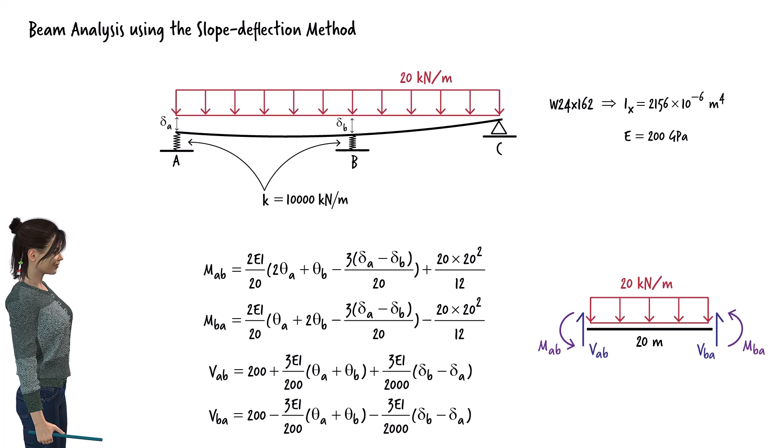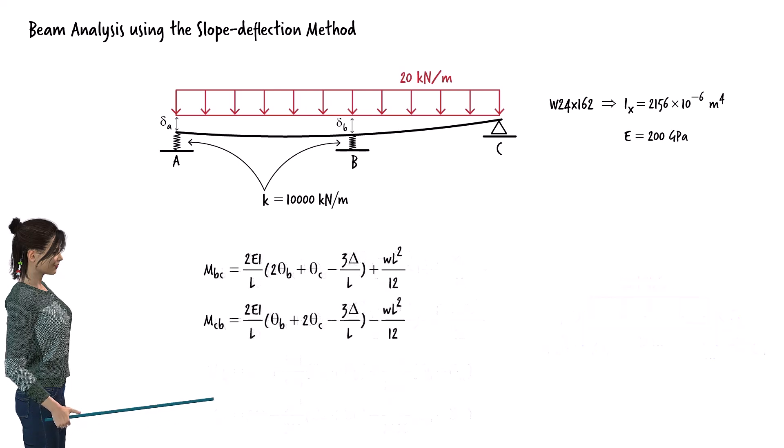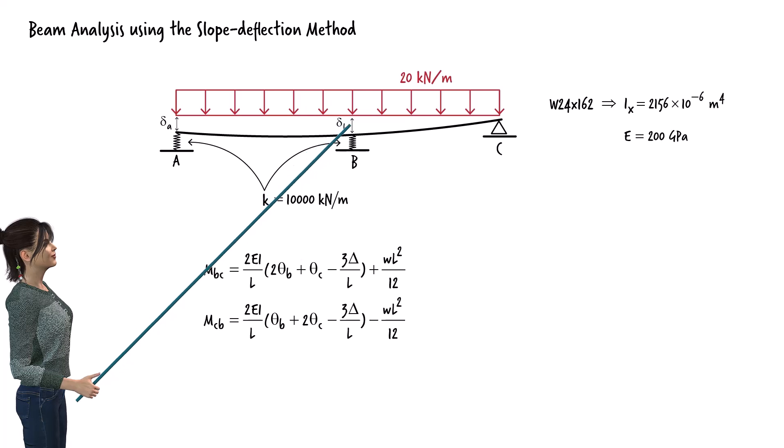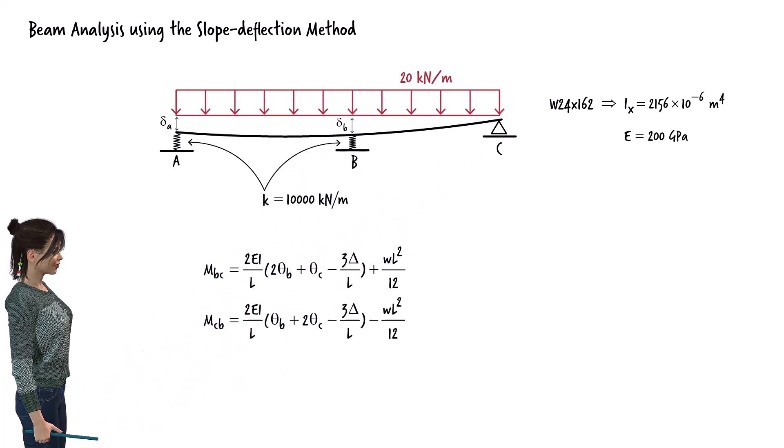Similarly, for segment BC, the slope deflection equations can be written as. Here, delta equals delta B, since the pin support at C does not settle. So, the slope deflection equations become